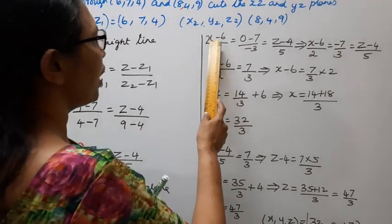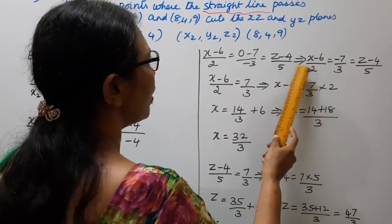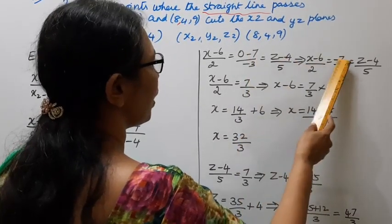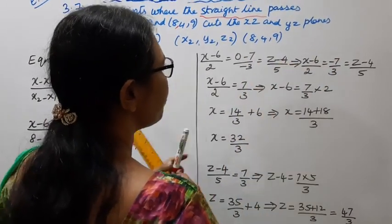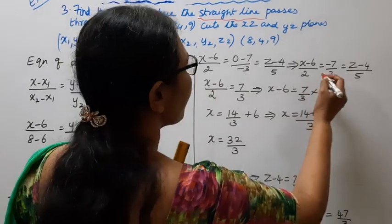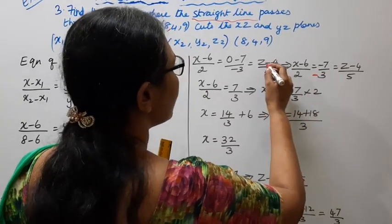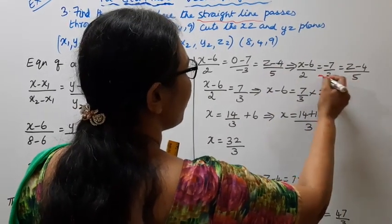The equation becomes: x minus 6 by 2, equal to 0 minus 7 by minus 3, equal to z minus 4 by 5.